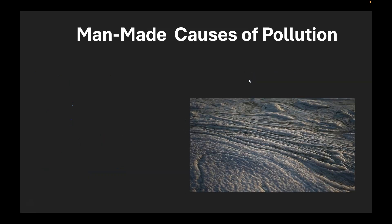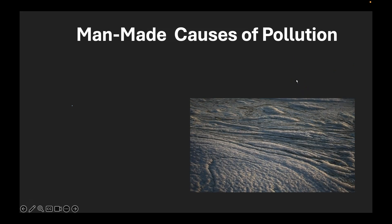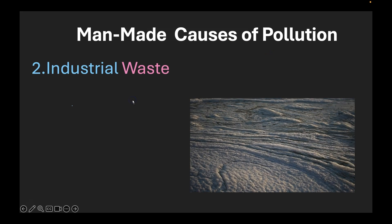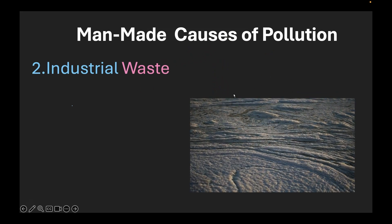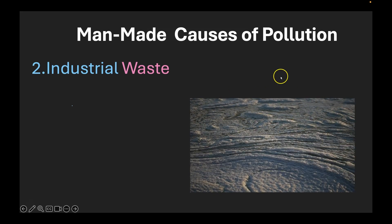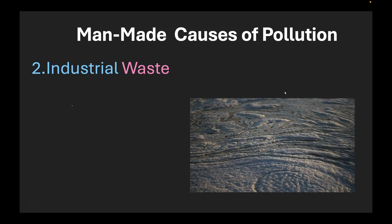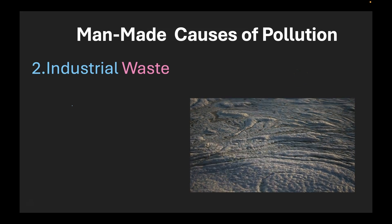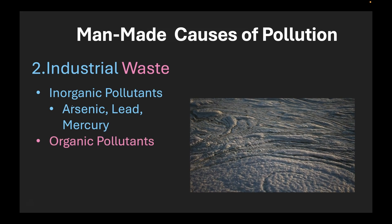Next let me show you a short video. Sadly this is not a bucket of soap water but the result of industrial waste being dumped into a lake. This is a pollutant from an industry which has formed a foamy layer on top of the lake water. This foamy layer can even catch fire and cause further pollution by polluting the air. Anyway, industrial waste can have a lot of different types of pollutants. We can have inorganic pollutants like arsenic, lead and mercury or organic pollutants that come from industries.